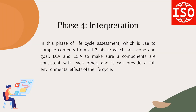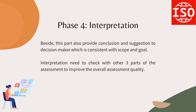Phase 4: Interpretation. In this phase of LCA, the results from all three previous phases — Goal and Scope, LCI, and LCIA — are compiled to ensure the three components are consistent with each other and can provide a full picture of the environmental effects of the life cycle. This part also provides conclusions and suggestions to decision makers, consistent with the scope and goal. Interpretation needs to be cross-checked with the other three parts of the assessment to improve overall quality.